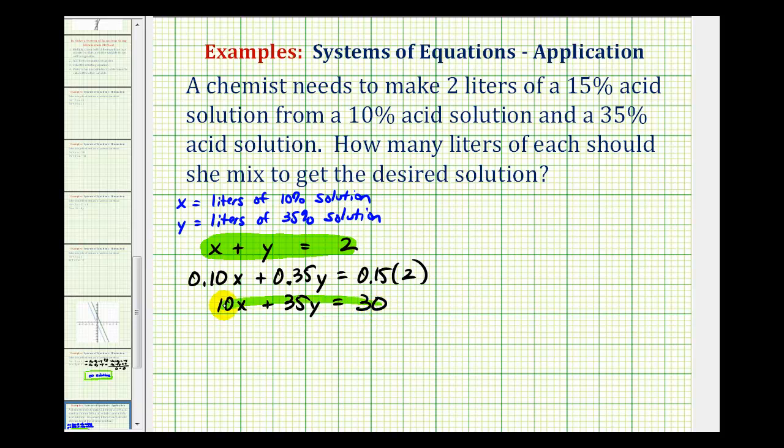Now we'll solve the system of equations using these two equations. So again we have x plus y equals 2, and then we have 10x plus 35y equals 30. Now we can solve this algebraically using elimination or substitution.